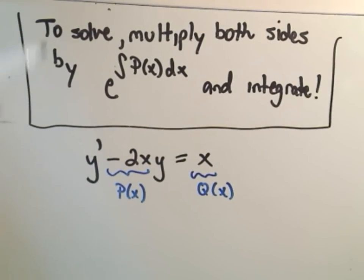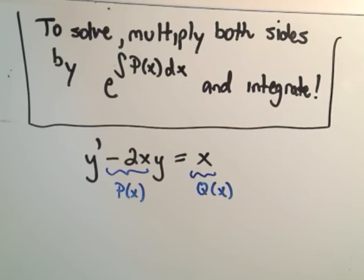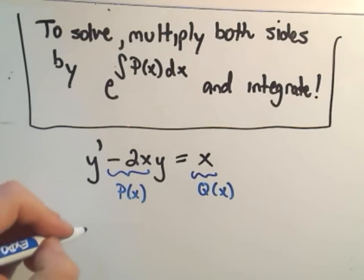So it says to solve this, what you do is whatever the P(x) is, you actually take e and raise it to P(x). And then you multiply both sides of this differential equation by that, and then you integrate both sides. So it seems a little strange but it's a technique that works.